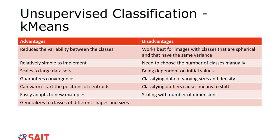K-means advantages include: reduces variability between classes, relatively simple to implement, scales to large datasets, guarantees convergence, can warm-start centroid positions, easily adapts to new examples, and generalizes to classes of different shapes and sizes. Disadvantages include working best only for spherical classes with the same variance, and requiring the user to manually choose the number of classes — so you need to know your image well.